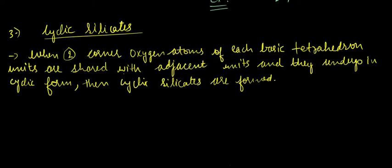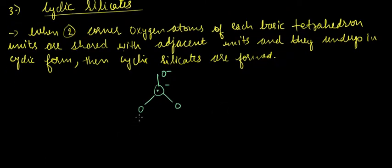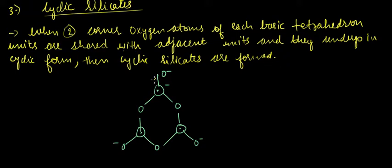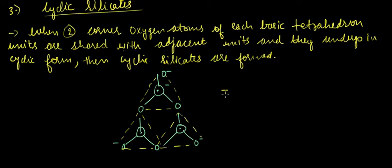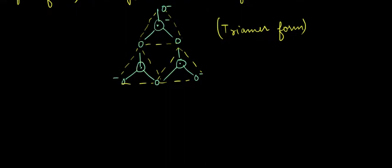An example of cyclic silicate can be drawn like this — this is an example of a cyclic silicate in trimer form.